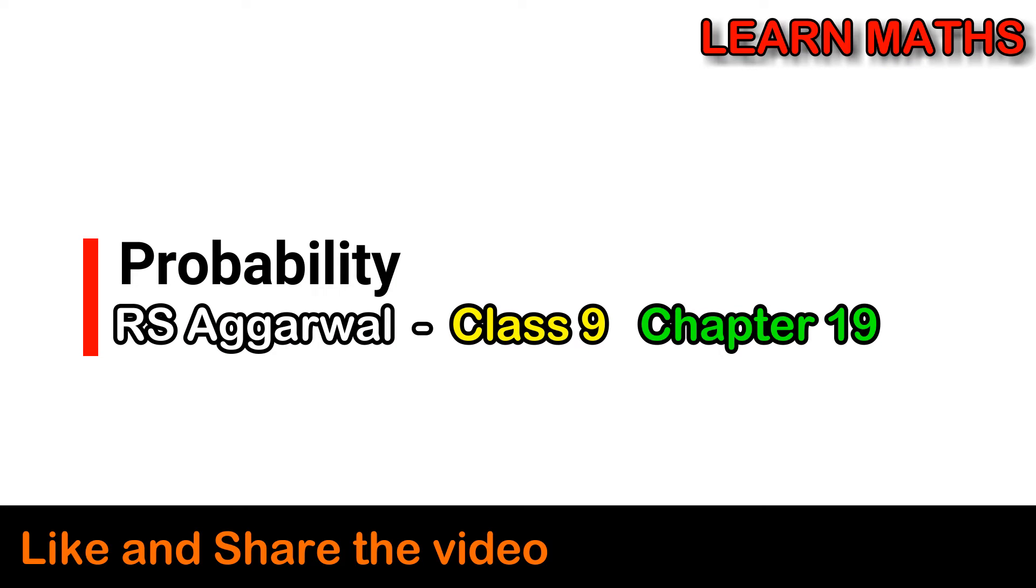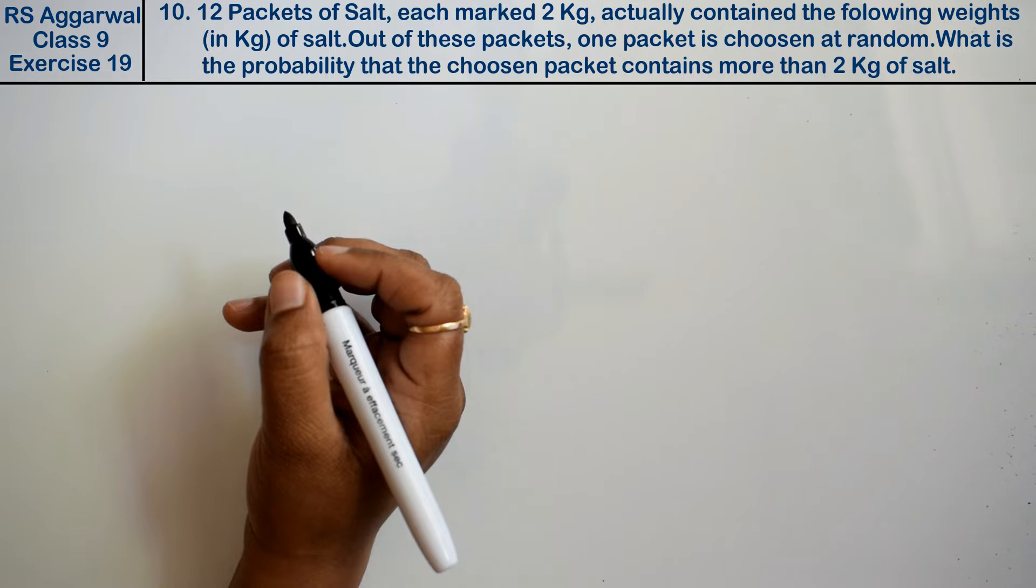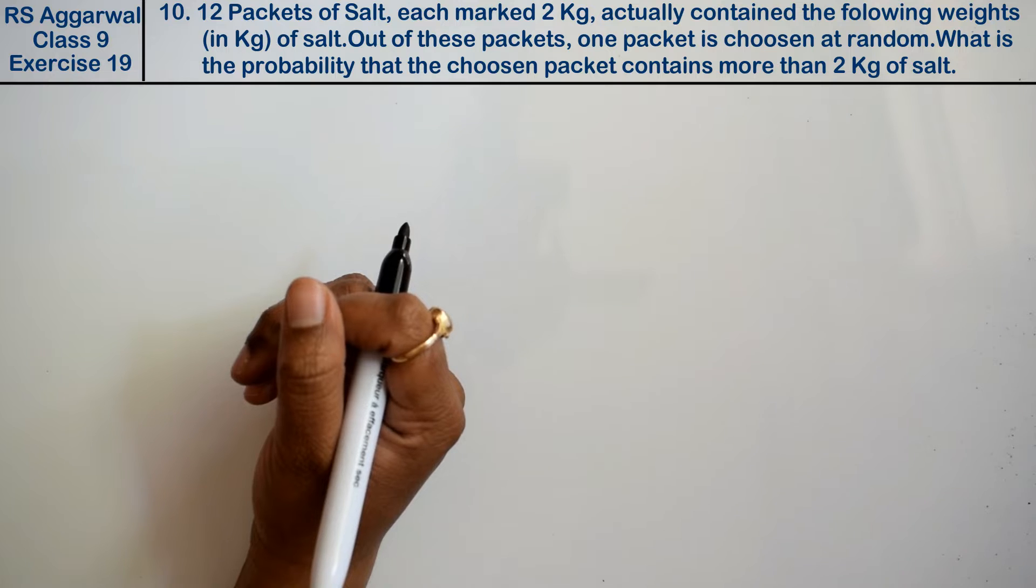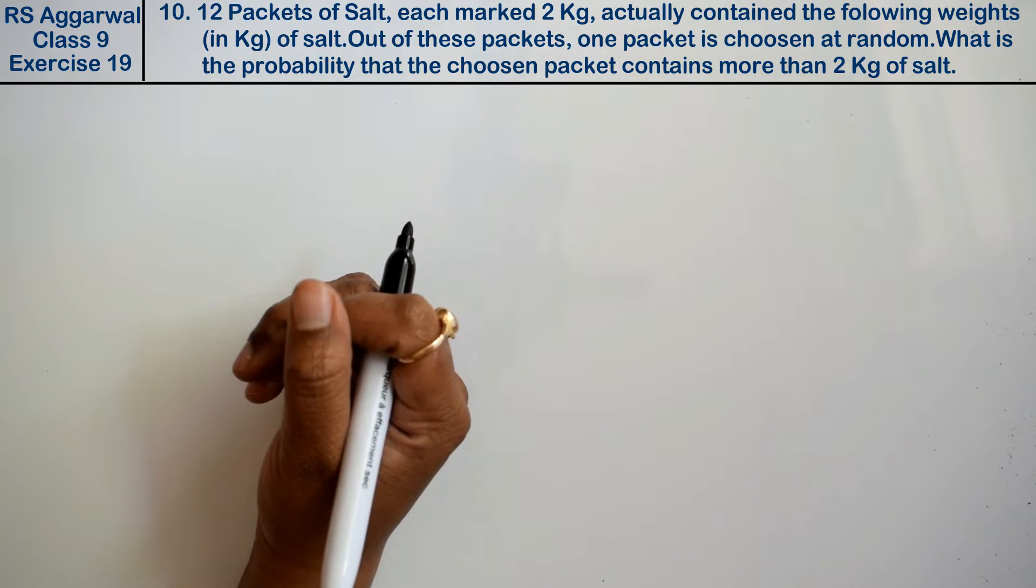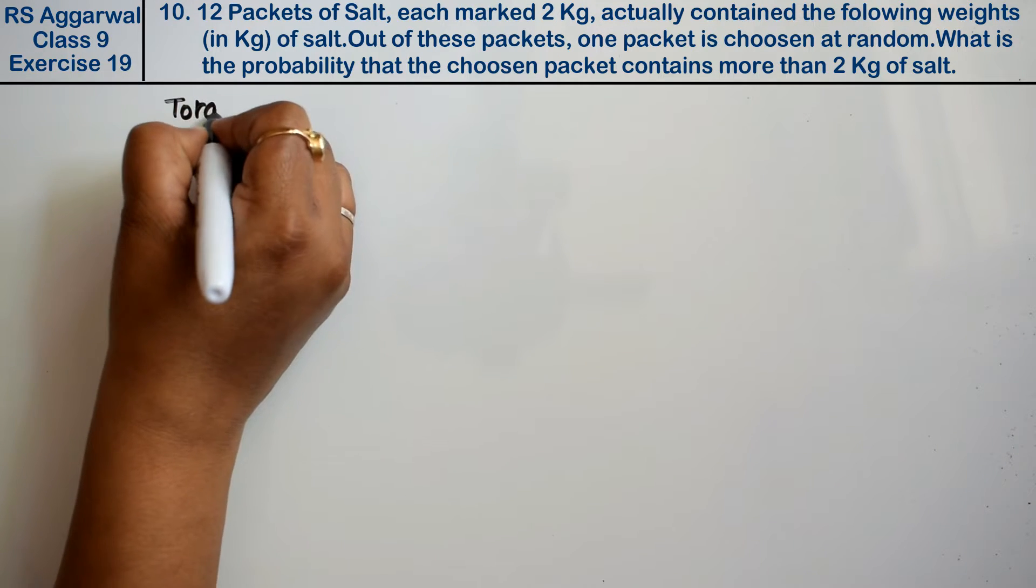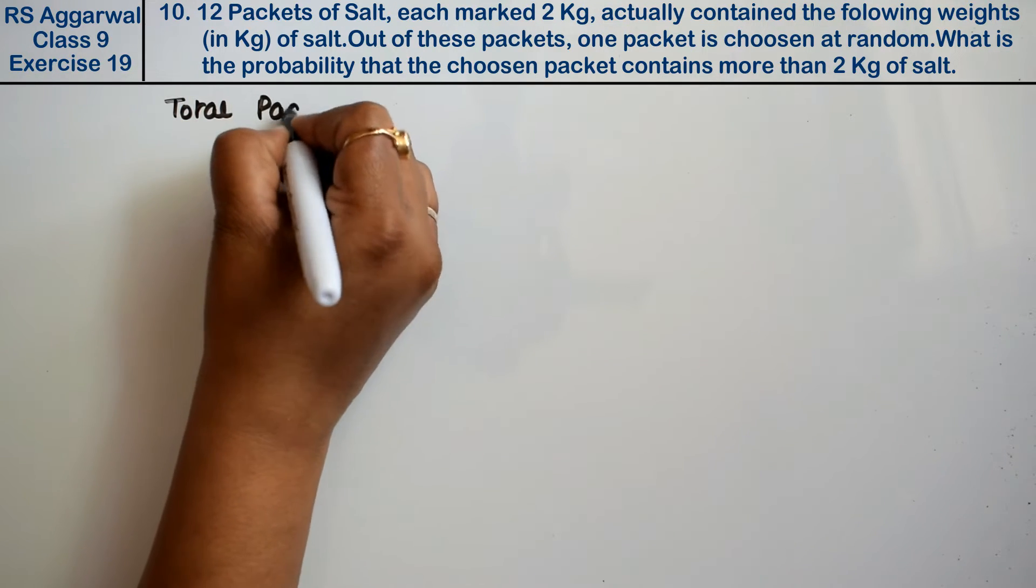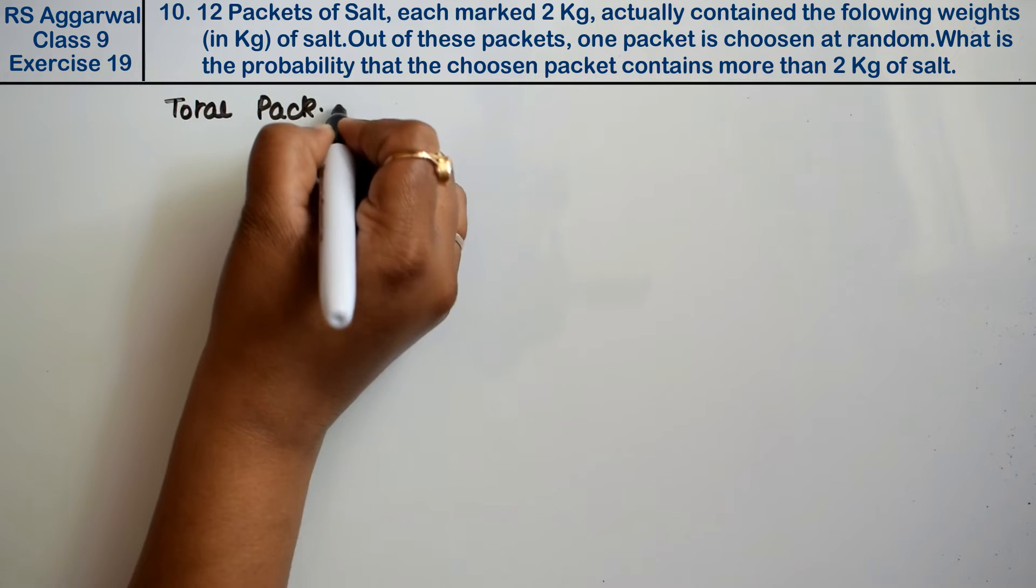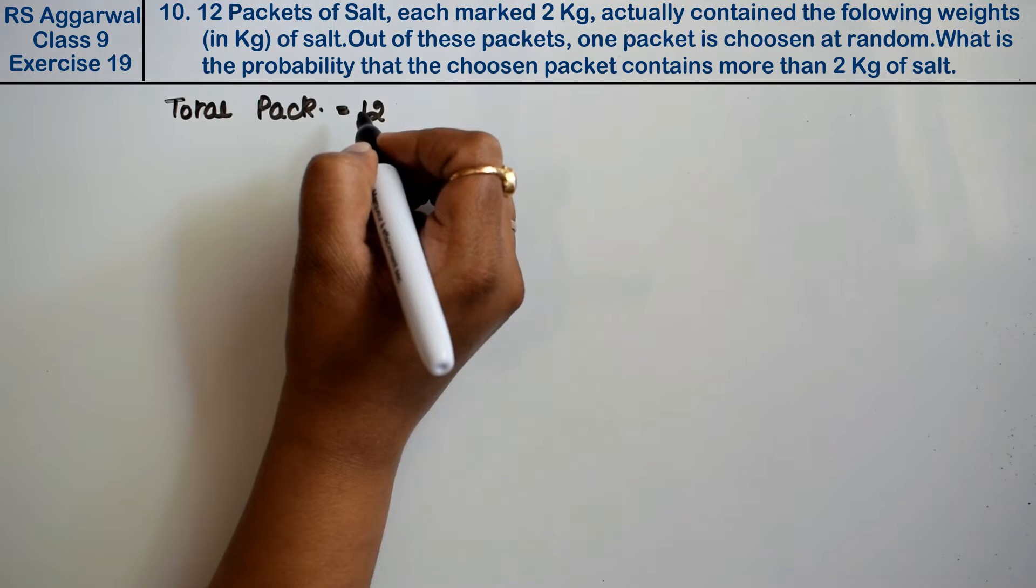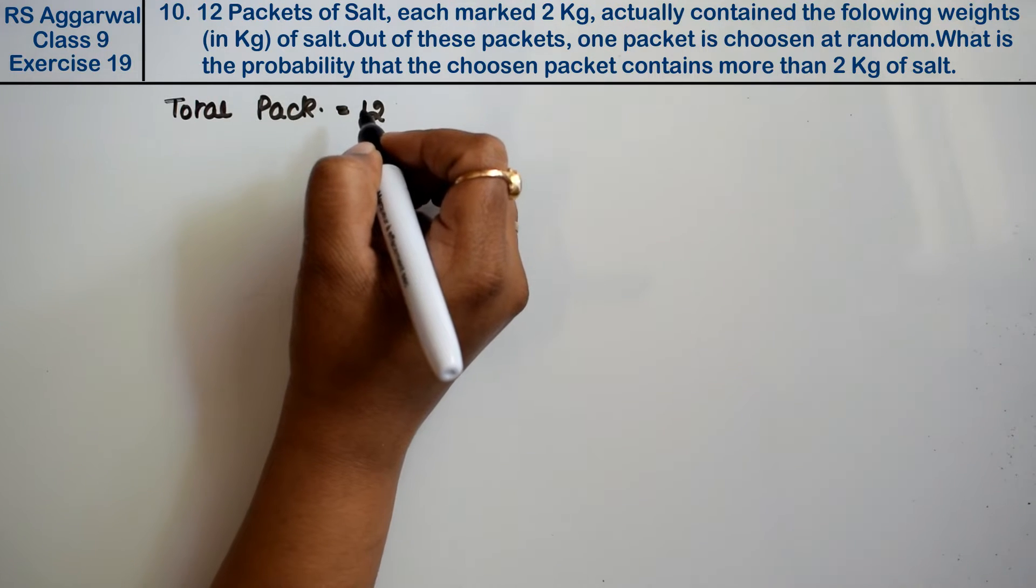Let's do question number 10 of exercise 19. This is a probability question. Question number 10 is: 12 packets of salt, each marked 2 kg, actually contain the following weights of salt. Total packets are 12. Now, 2 kg is marked on them, but all have different weights.